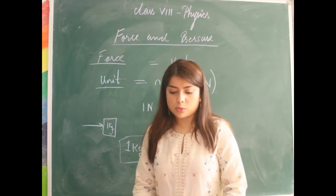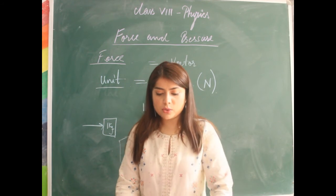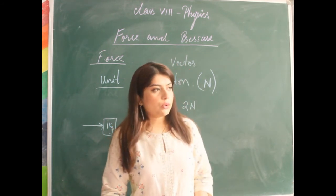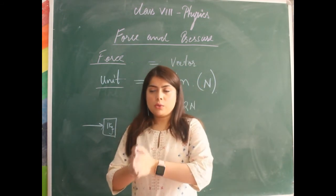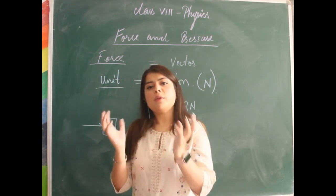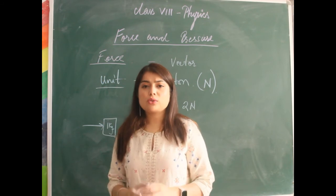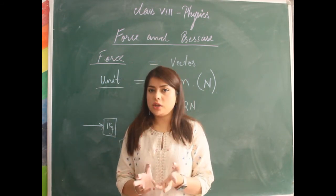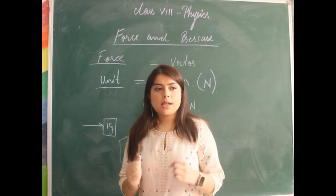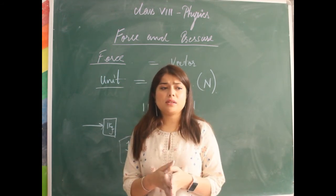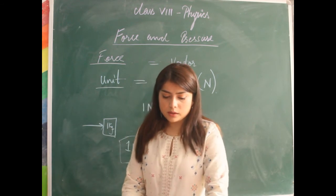On page number 39, there is a box. The first point is: a body in which the inter-spacing between its constituent particles does not change when force is applied is called a rigid body. For example, a stone — if you apply some force to it, it will change its position, but the shape of the stone cannot be changed. That object whose shape does not change is known as a rigid body. The opposite is a non-rigid body — for example, slime. If you apply force to slime, its shape will change, so slime is a non-rigid body.